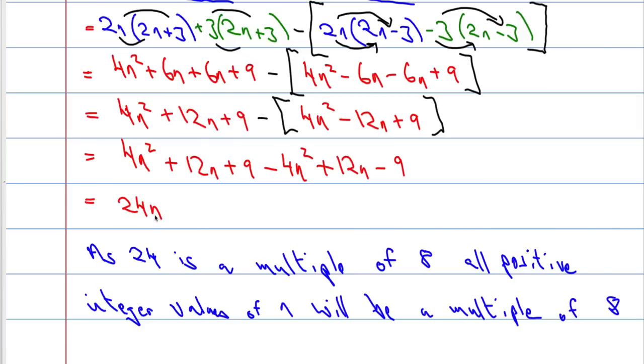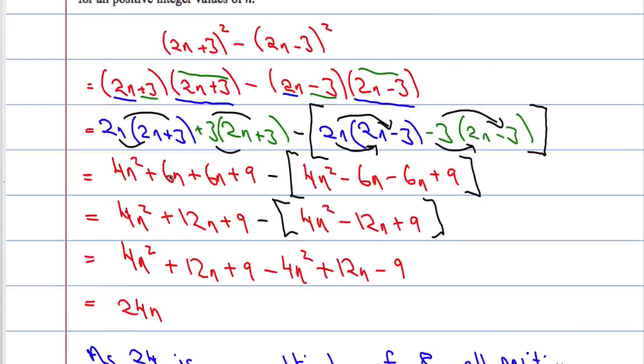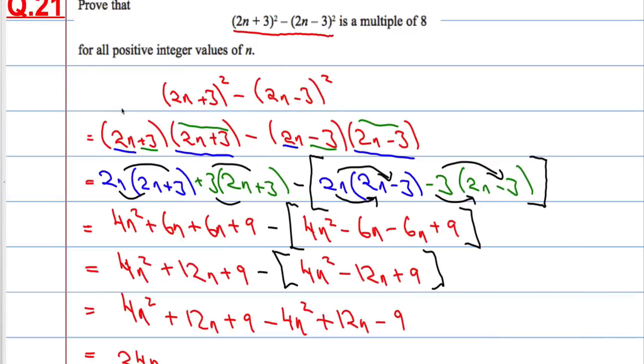If you take any number, for example say 2, 2 times 24 is 48, and 48 is a multiple of 8. Say 3, we would get 72, and 72 is also a multiple of 8. So any number at all, so long as it's positive and whole, if we substitute it in here, we will get a number that is a multiple of 8. And we've proven it algebraically.